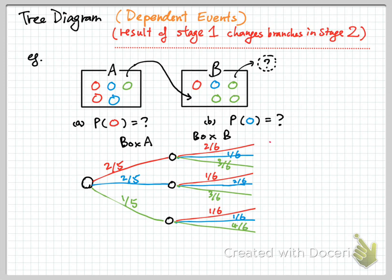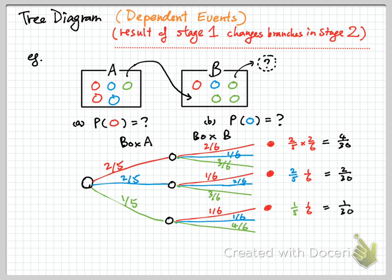So we can look at the event — like a red ball coming from box B. The probability will be 2/5 times 2/6, and the other probabilities are like this respectively. The green one will be 1 over 5, and I will keep the same denominator of 30 for easier comparison. So the probability of having a red will be 4 plus 2 plus 1, which is 7 out of 30. That is the answer — a 7 out of 30 chance to have a red.